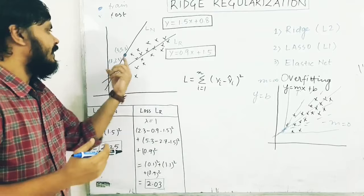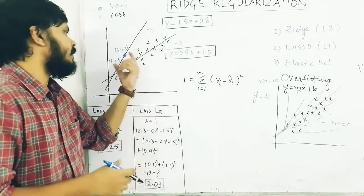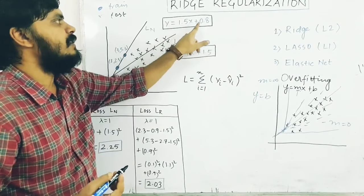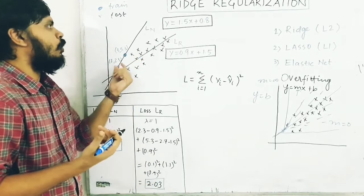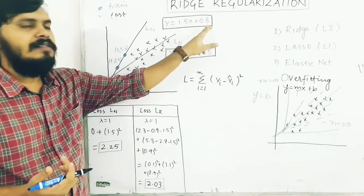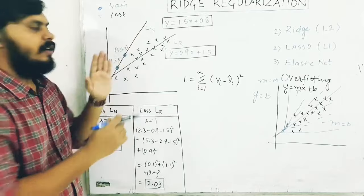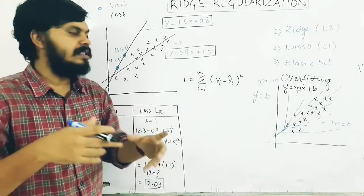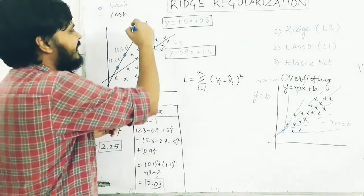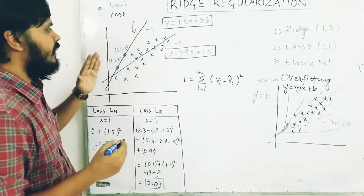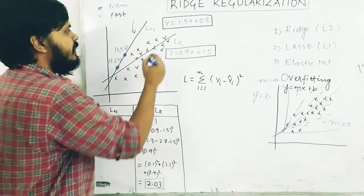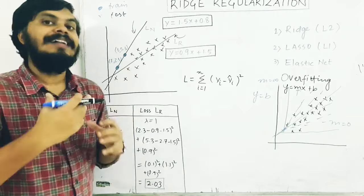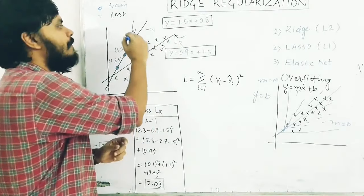If you think about training data with only two points, the best fit line will pass through both points. I have already calculated the line: y equals 1.5x plus 0.8, simple coordinate geometry. But there's another line, the second line, which will probably perform better. Although this second line will make more mistakes on training data, it will still perform better in comparison to the first line.